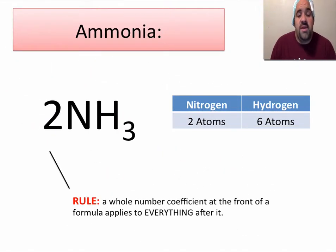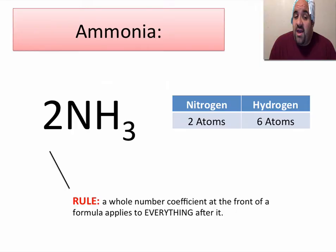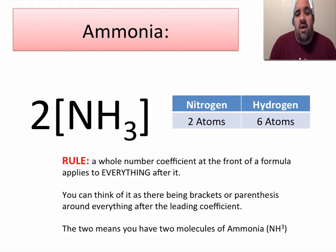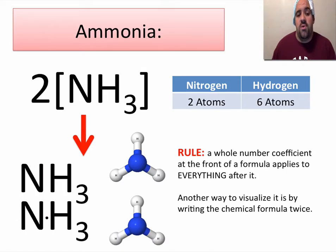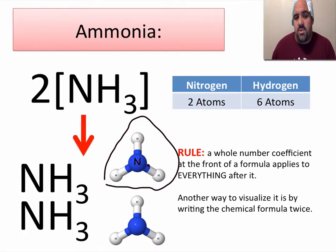The rule is simple: a whole number coefficient at the front of a formula applies to everything after it. So if we had two ammonia molecules, 2NH3, there would be two atoms of nitrogen and six atoms of hydrogen because you have two H3s. A way to visualize this is with brackets — there are two units of nitrogen. 2NH3 means there are two ammonia molecules. One ammonia molecule has one nitrogen atom and three hydrogens attached to it. 2NH3 would be two of these units, so you have two blue nitrogen atoms and six total hydrogens.